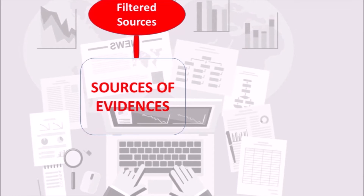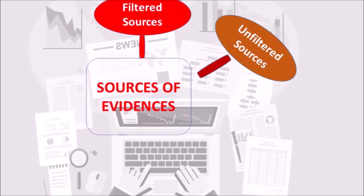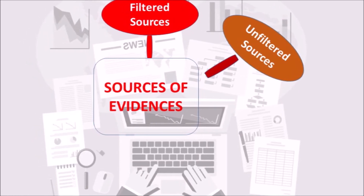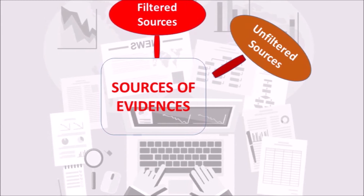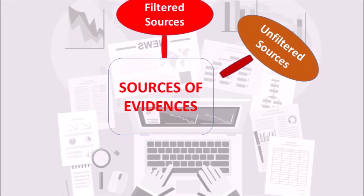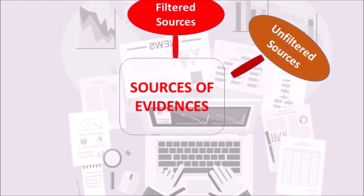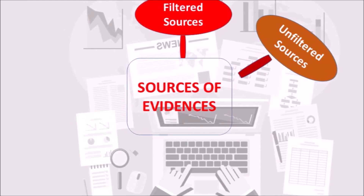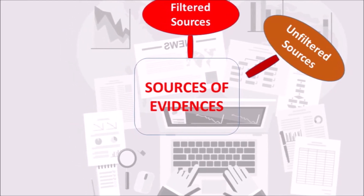The next category is unfiltered resources, that is primary literature. It provides the most recent information. Examples include Medline, CINAHL, etc., which provide primary and secondary literature for medicine.